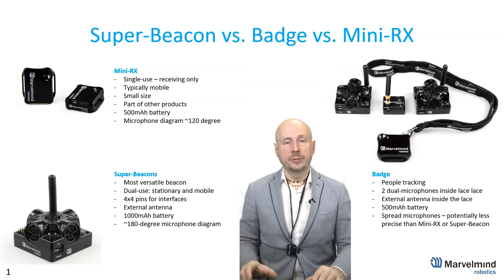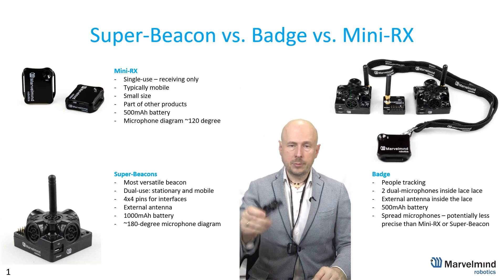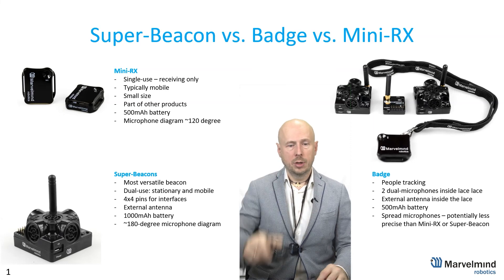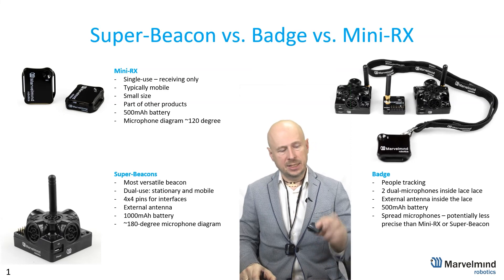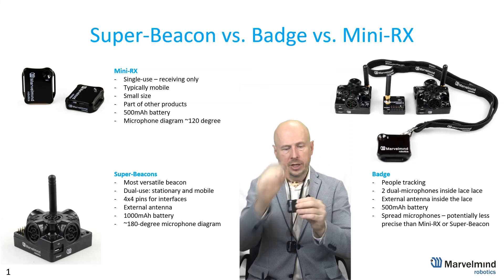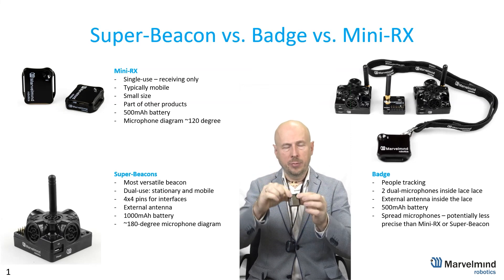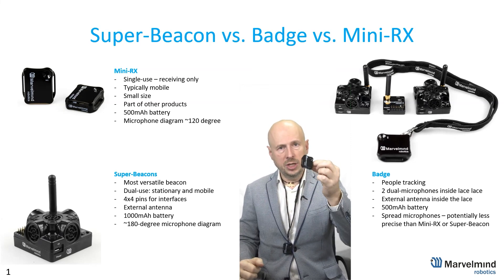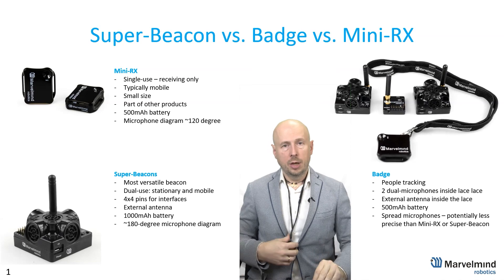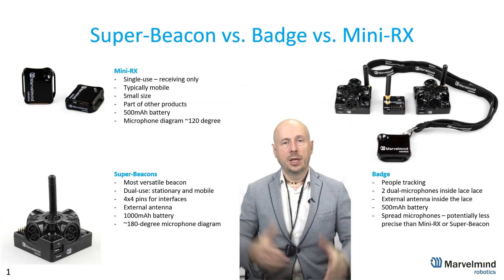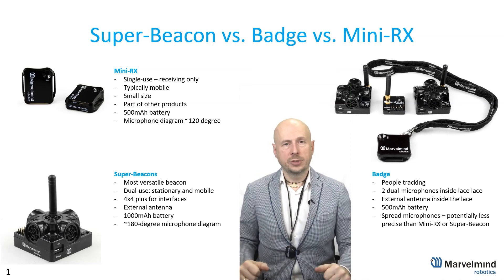As a summary: when you don't know what to choose, choose Super Beacon. When size matters and you clearly understand the direction and the embedded antenna limitations, use MiniRx. When you want to track people, use the badge. Thank you very much.